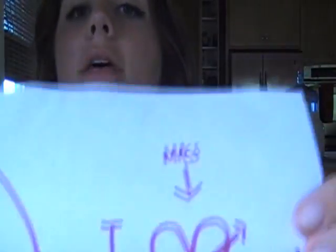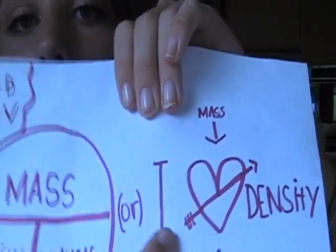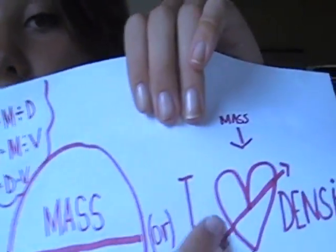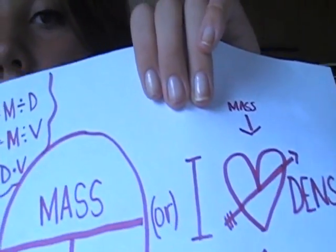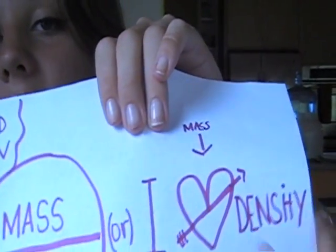Or you can use this other one — 'I love density.' The arrow through the heart is like the division line. The top of the heart is an M, and the bottom is a V. So mass divided by volume is how to find the density.